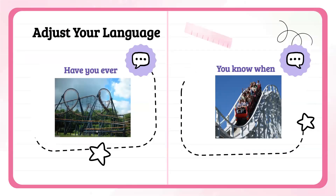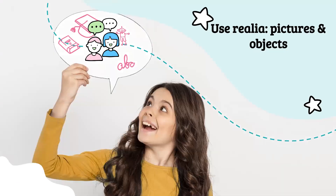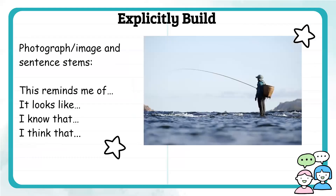One of the things you want to consider is to adjust your language. When talking with a lower-level English learner, make sure you're using vocabulary that isn't tripping them up and that you take away your assumptions. Start with questions that allow them to connect to what you're showing them — for example, 'Have you ever seen an amusement park?' instead of assuming they know what a roller coaster is. Another great way to build background is to use realia — pictures and objects that help represent concepts they might not have prior knowledge of. You can also explicitly build background by using photos and images and connecting them to language using sentence stems such as: 'This reminds me of,' 'I know that,' 'I think that.' All those things help explicitly build vocabulary and skills.